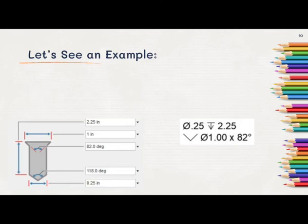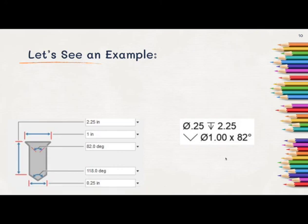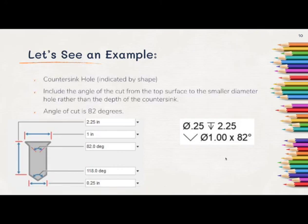So let's take a look at another example. Here, we have a different hole type in the hole diagram, and the hole note over here. This is a countersink hole that's indicated by the shape, as well as this symbol in the hole note.